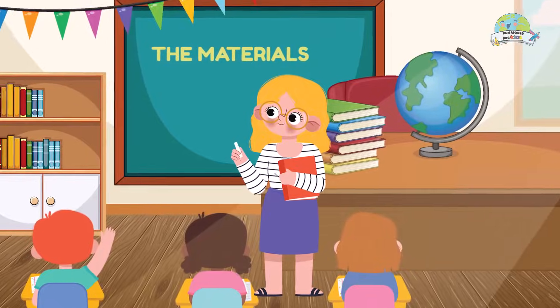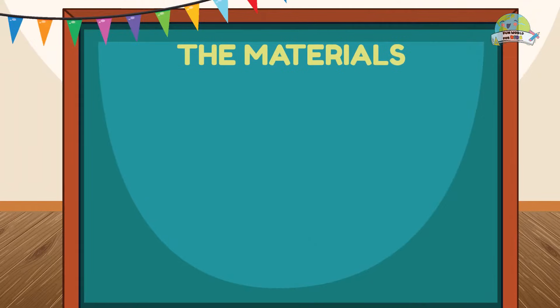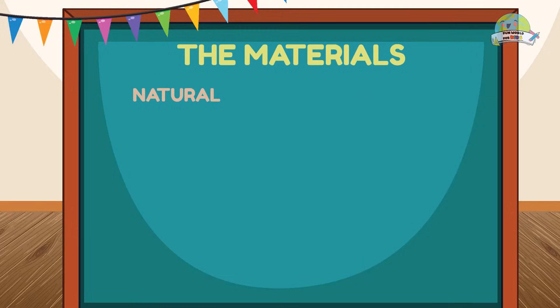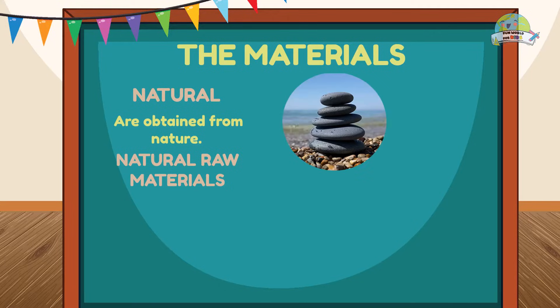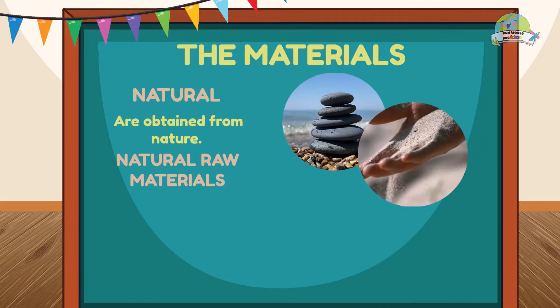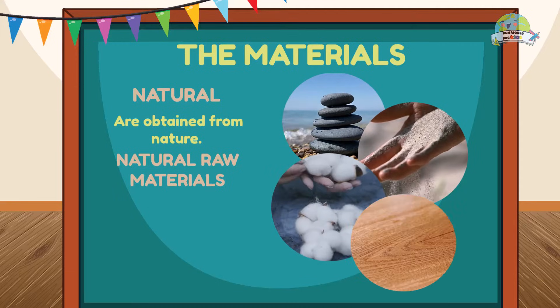The first thing you should know is that materials can be of two types: natural or artificial. Natural materials, as their name indicates, are obtained from nature and are called natural raw materials, like stones, sand, cotton, or wood.